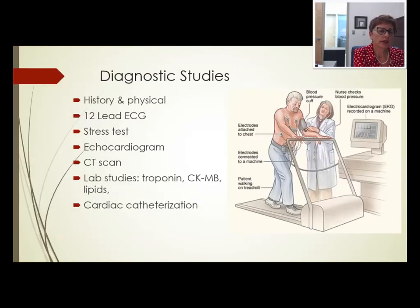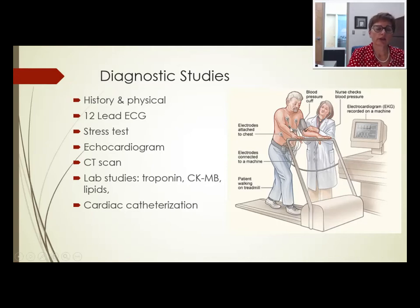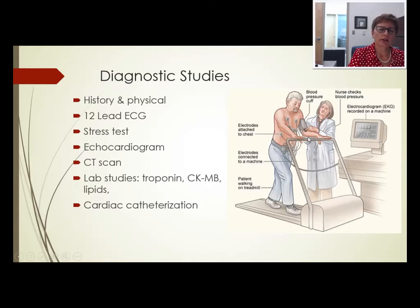Chronic stable angina is usually controlled with medications such as nitroglycerin and other oral anti-anginals. If someone complains of chest pain, the doctor will do a history and physical, a 12-lead ECG, and probably a stress test — either an exercise stress test or a nuclear stress test. If the patient can't tolerate exercise, electrodes are attached to their chest, the ECG is monitored, and pictures are taken to see if any part of the heart isn't receiving enough oxygen.